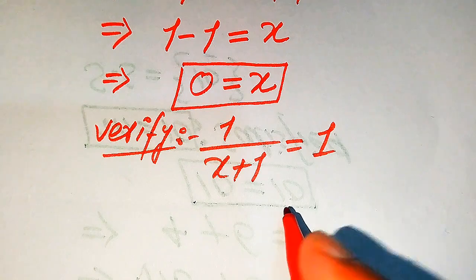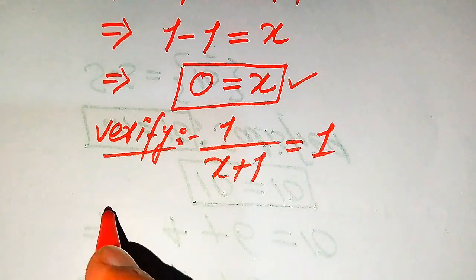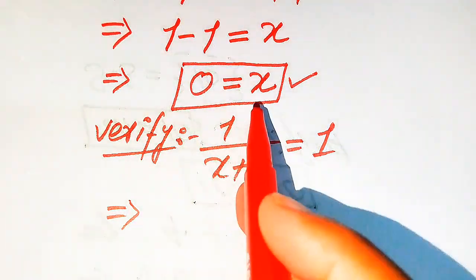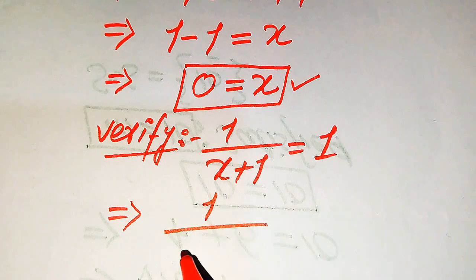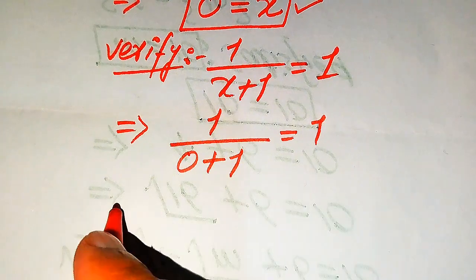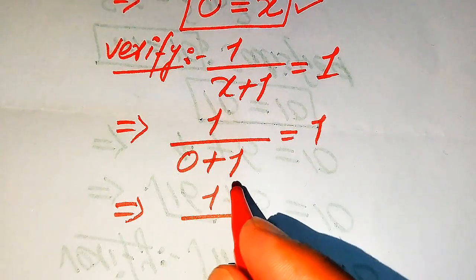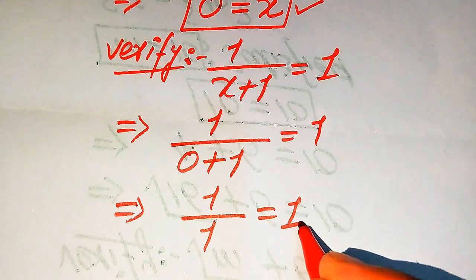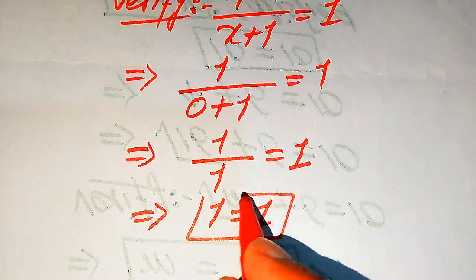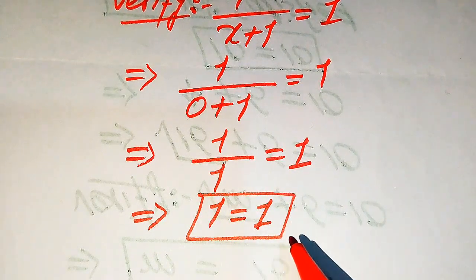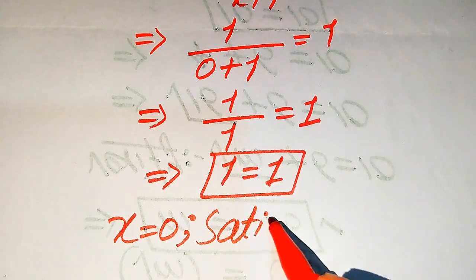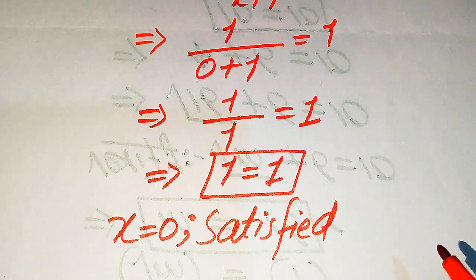Now we put this value of x into the left hand side and we check the behavior of this equation. When we put x equals 0 here, it becomes 1 divided by 0 plus 1 is equals to 1. And 1 divided by 0 plus 1 becomes 1 divided by 1, which is equals to 1. So both sides are equal, which means that x equals 0 satisfies the given question statement.